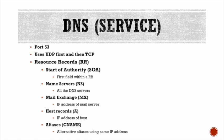Resource records are the records within the DNS database. The Start of Authority — SOA — is the first field within a resource record. The Name Server — NS — lists all DNS servers. The Mail Exchange — MX — record holds the IP address of the mail server. The Host record — A — holds the IP address of all hosts within a given network. The alias — CNAME — provides alternative aliases using the same IP address. If you want to know which records exist for any domain on the internet, you would query for NS, MX, A, and CNAME records.